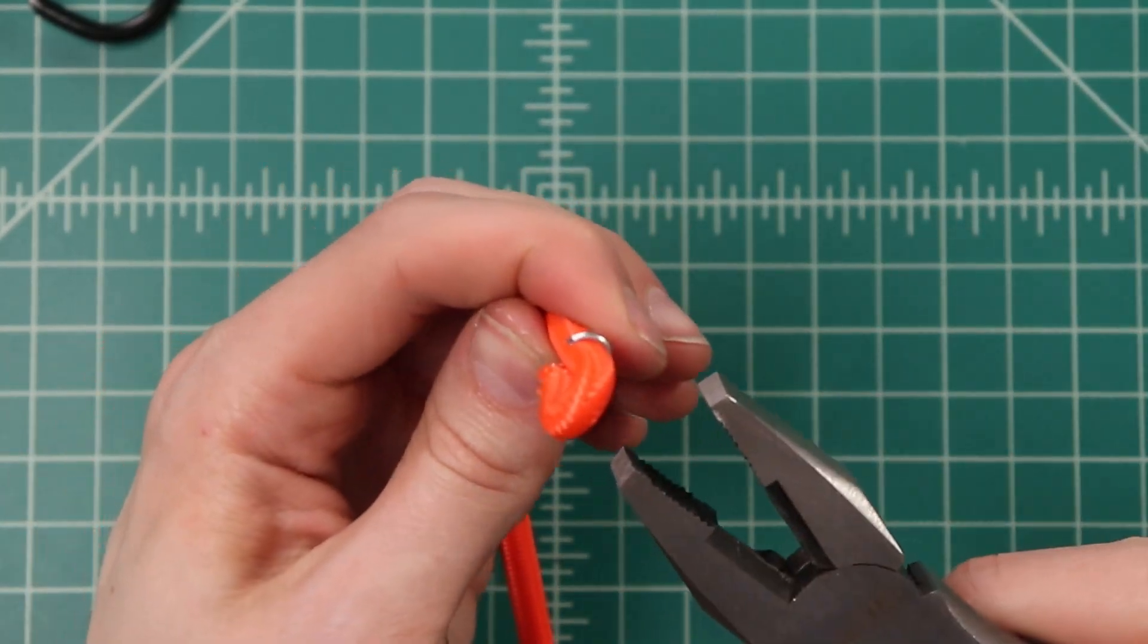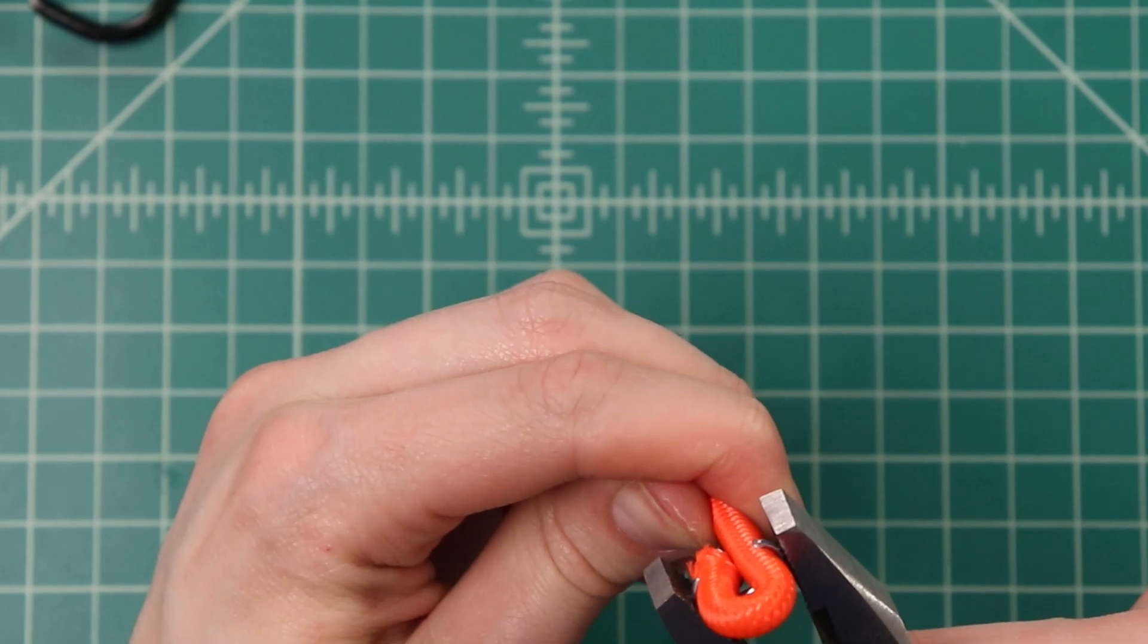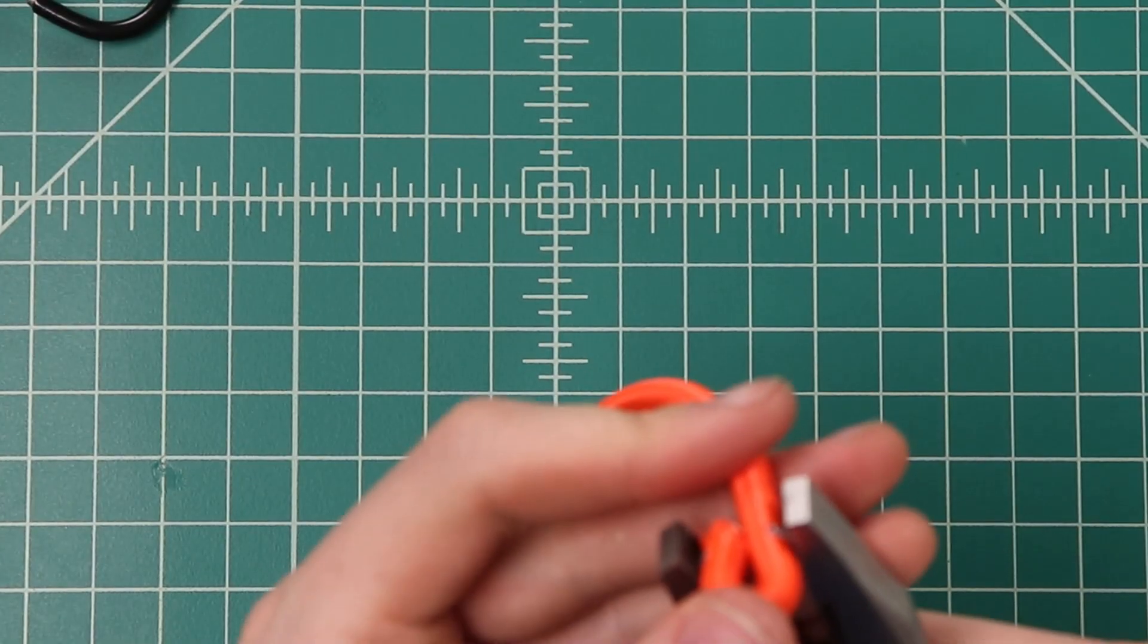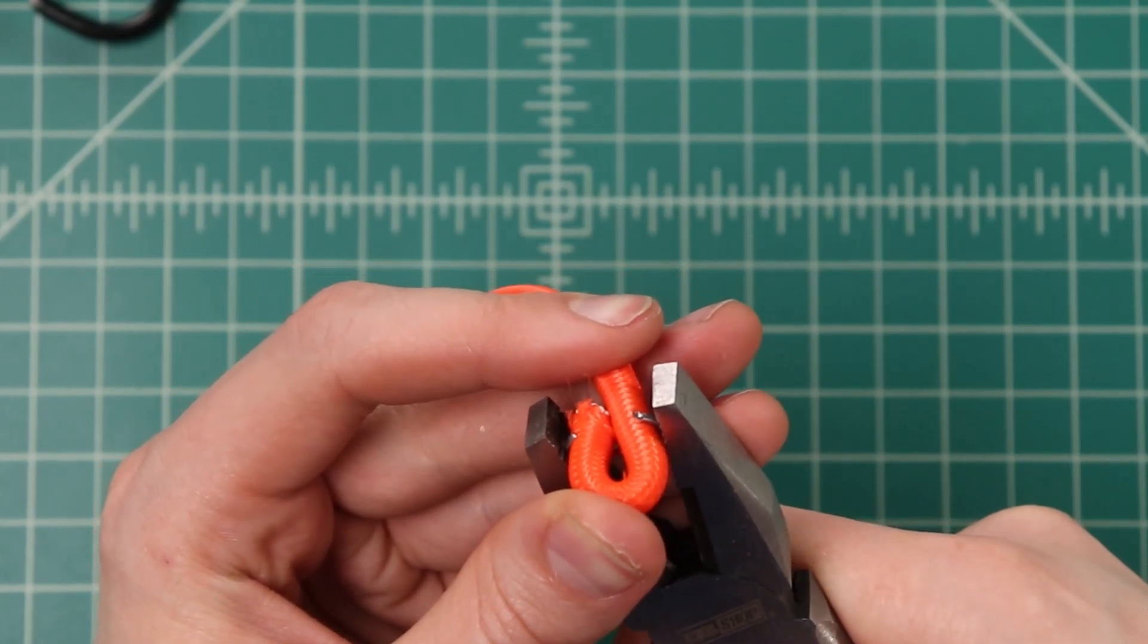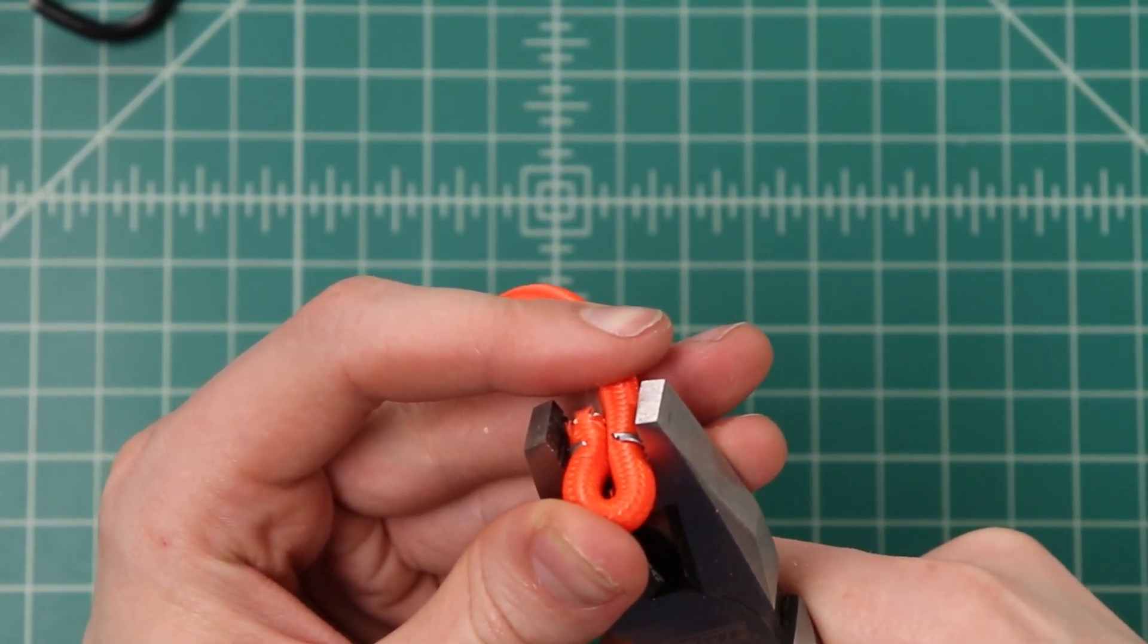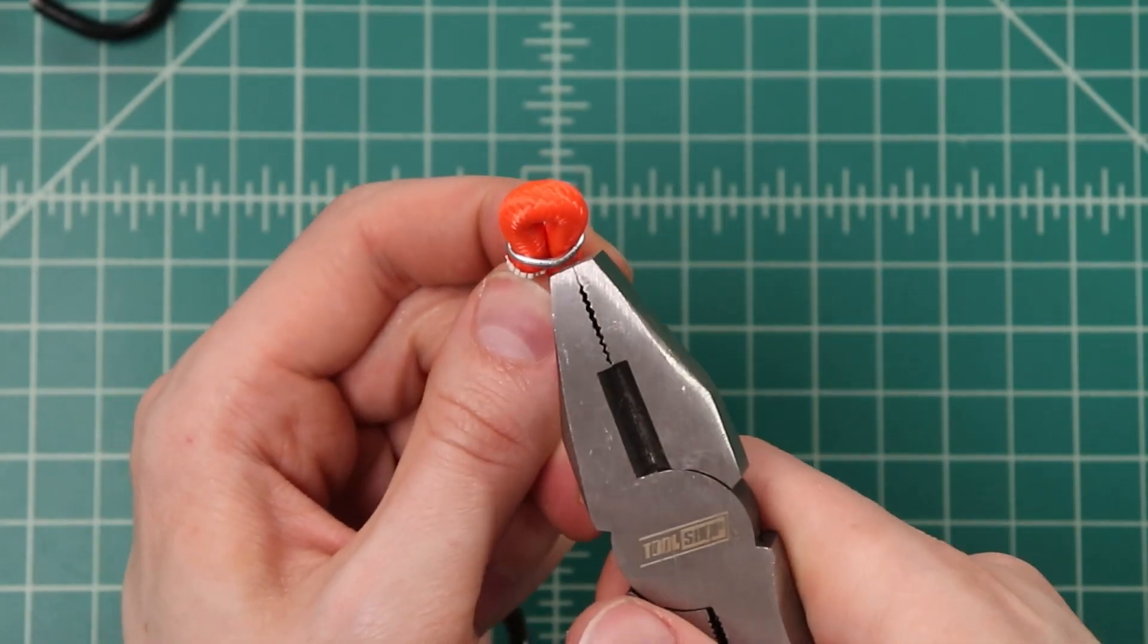And then taking our pliers, we're just going to gently pinch it, the same way that we did with the other hog ring pliers. We don't want to go quite as far. Having that hog ring facing out, pinch them gently there.